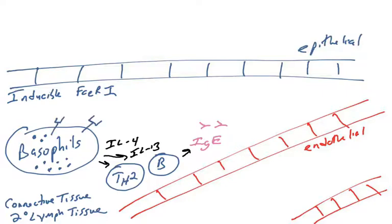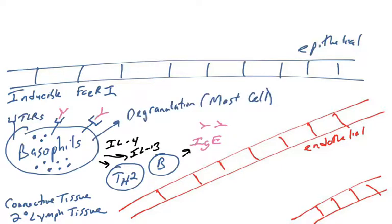Once IgE is made, it can go and bind the FC-epsilon receptors on the surface of basophils, which will allow them to degranulate just like mast cells. And in fact, the granules in basophils are very similar to the granules in mast cells.